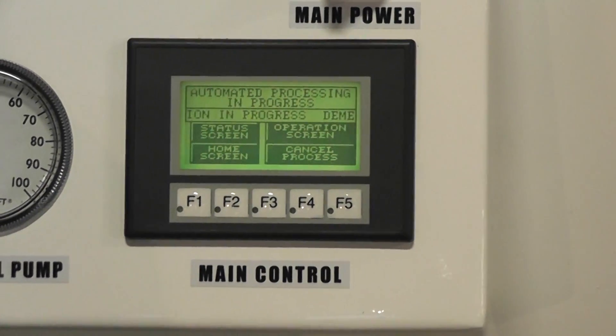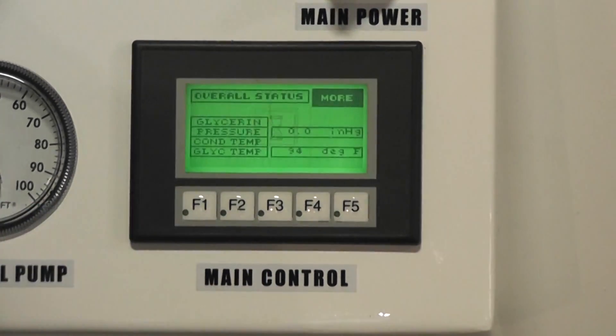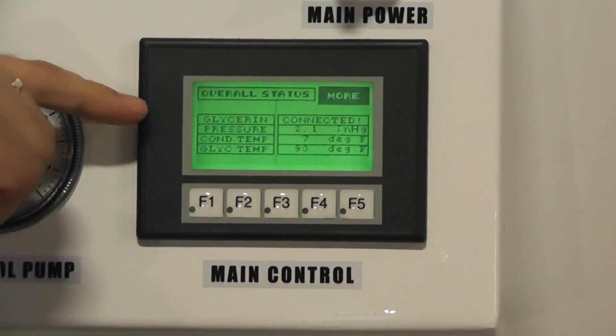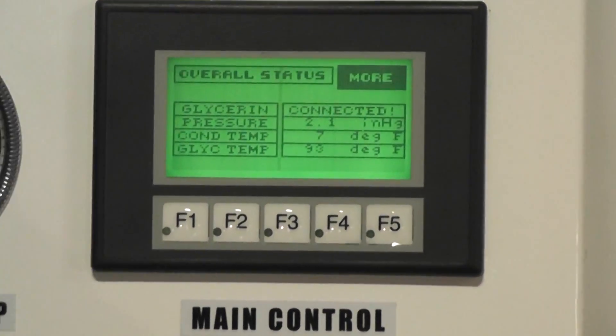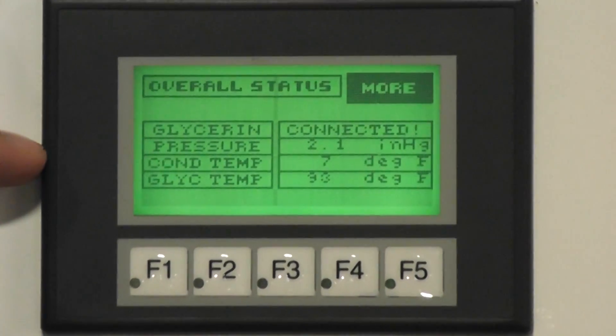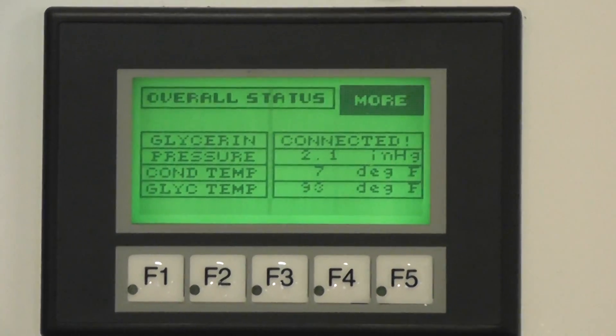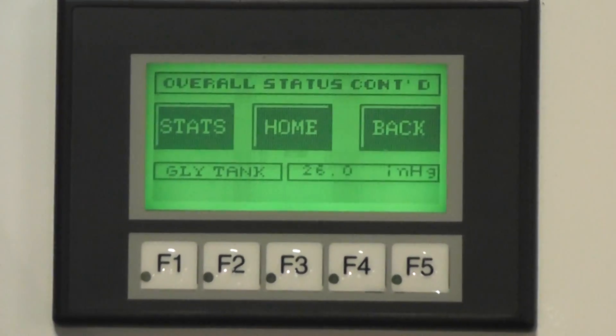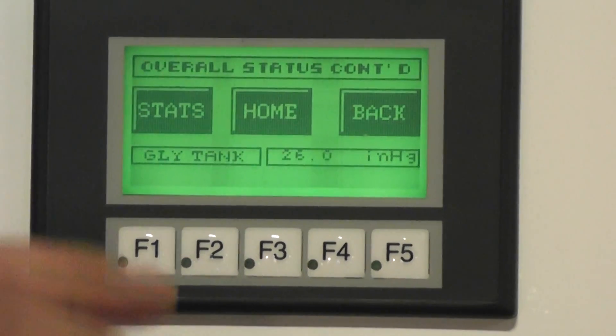Also, just in case I'm curious about the state of these machines, I can press the status screen button. That will give me our pressure in absolute inches of mercury, the temperature in Fahrenheit of our condenser, as well as the temperature of our glycerin, and the pressure in absolute inches of mercury in our glycerin tank.